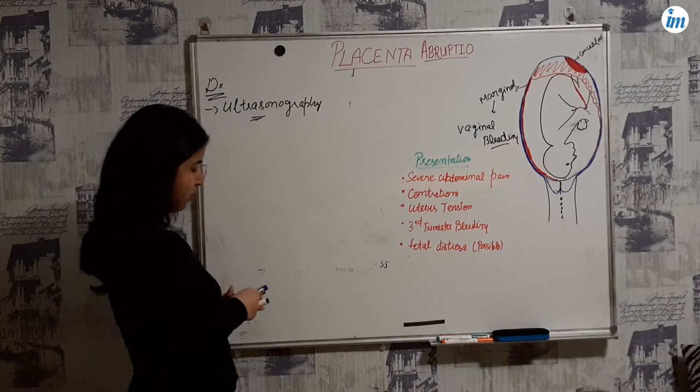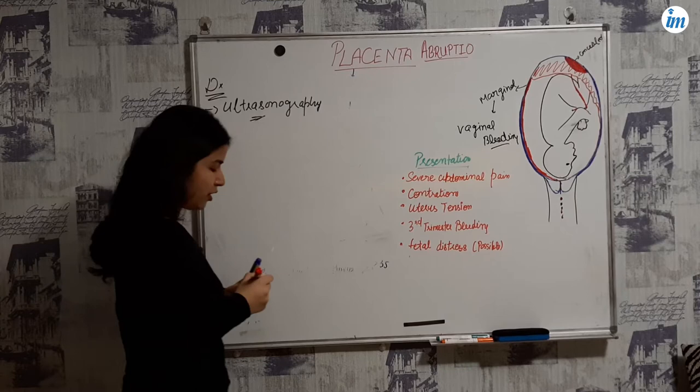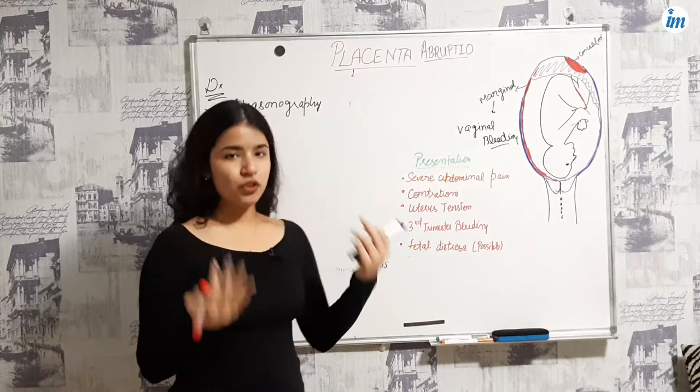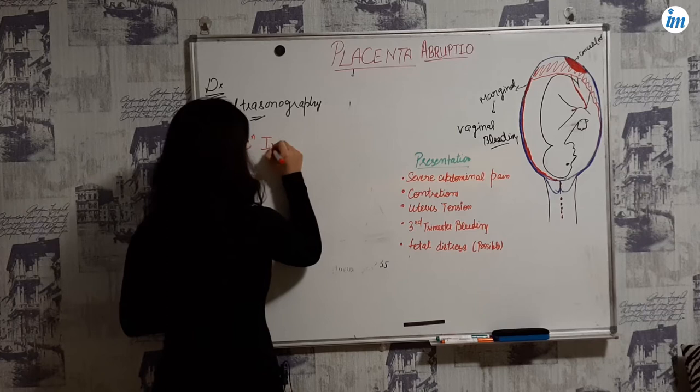Now for the treatment of placenta abruptio — depending upon the condition of the female, you can go for vaginal delivery or a caesarean section. Let me first discuss the indications for C-section.